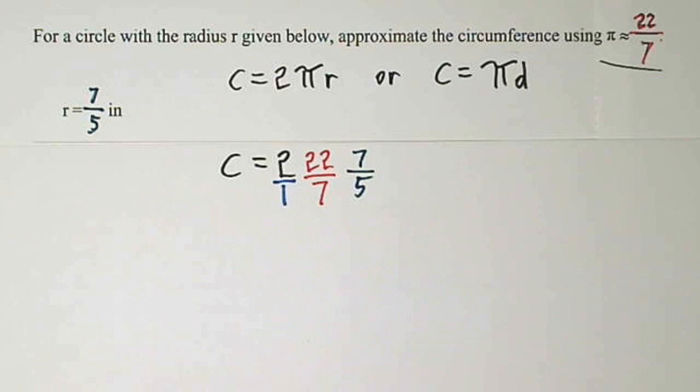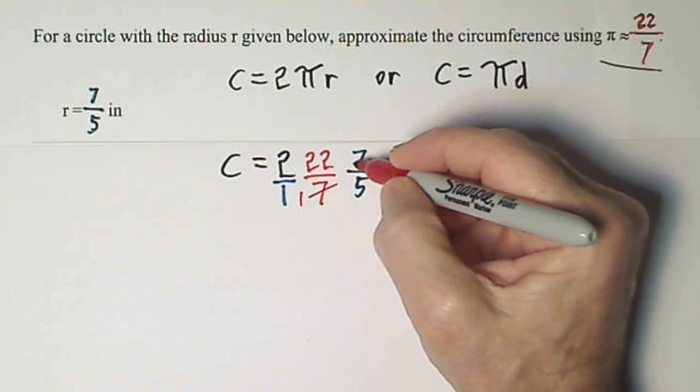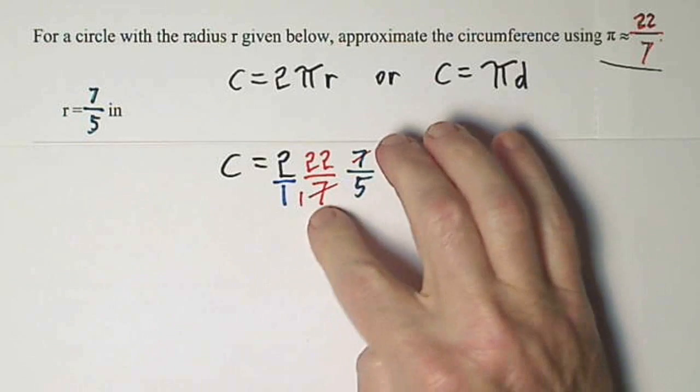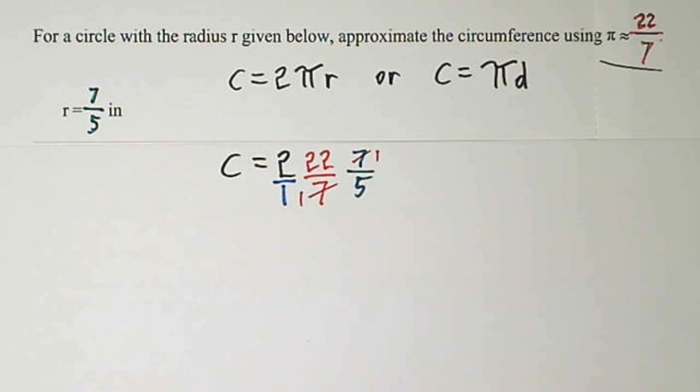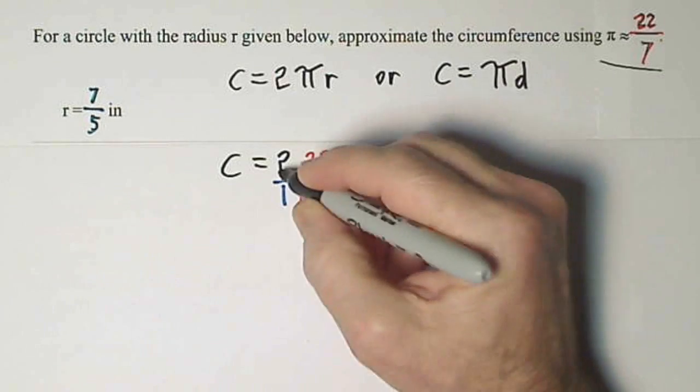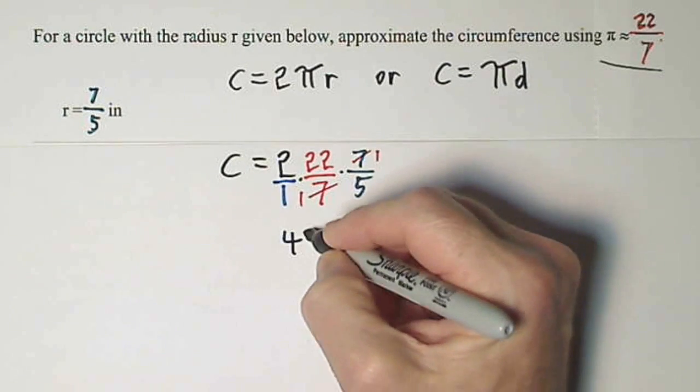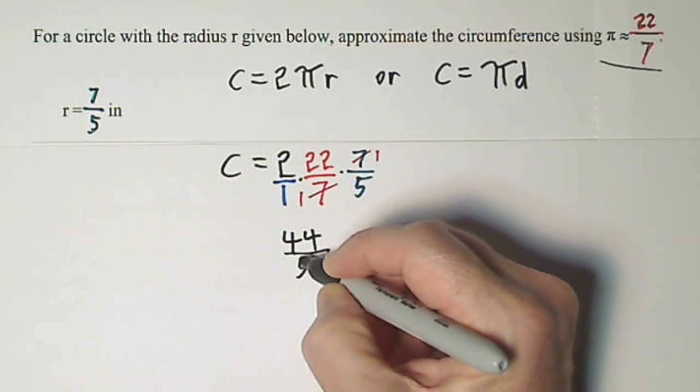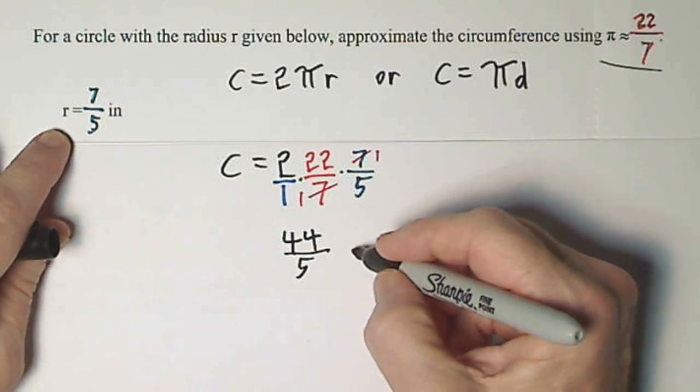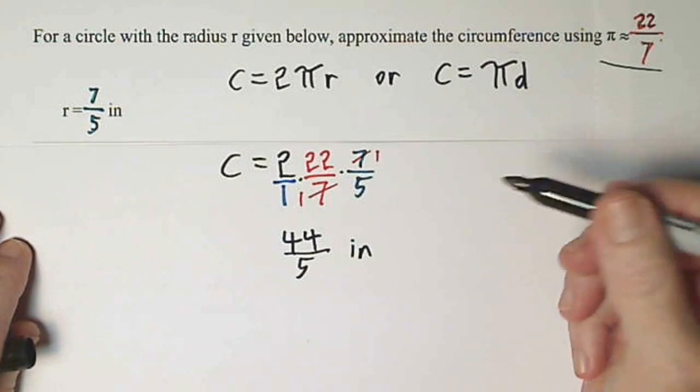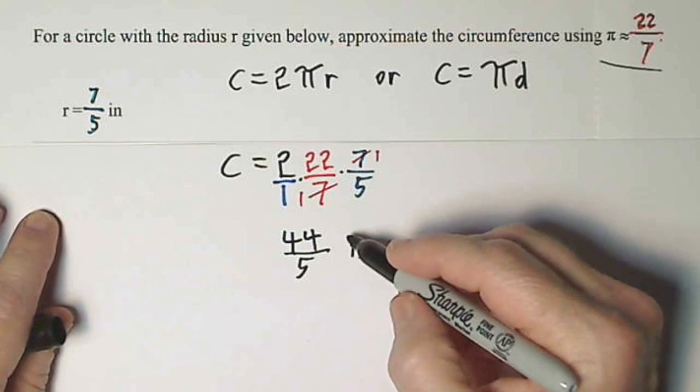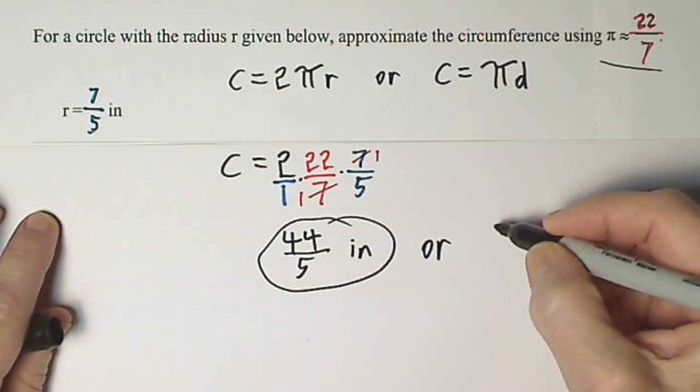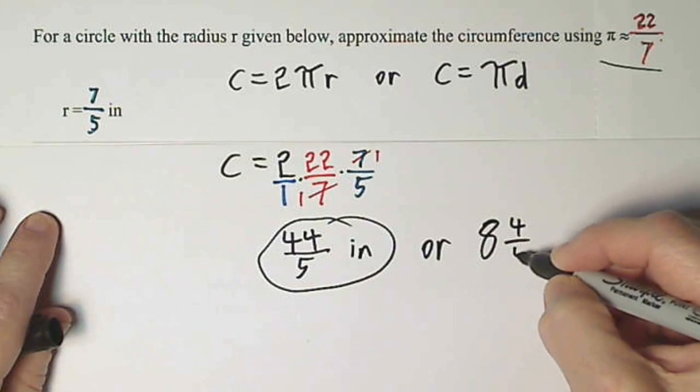And now all we have to do is multiply these fractions and we'll have the circumference. I definitely want to cancel any common terms. 7 goes into 7 once. 7 goes into 7 once. I should say common factors. You're always allowed to cancel common factors. So now all we have to do is multiply what's left. So 2 times 22 gives us 44. And then that's 1 times 5. So 44/5. The units are inches. And if we want to make this a mixed number, we can simply divide in. So that would be 8 and 4/5. So this answer is fine. Or you could write 8 and 4/5 inches.